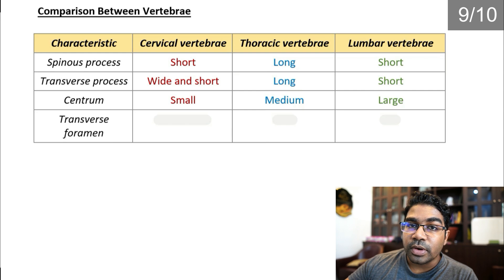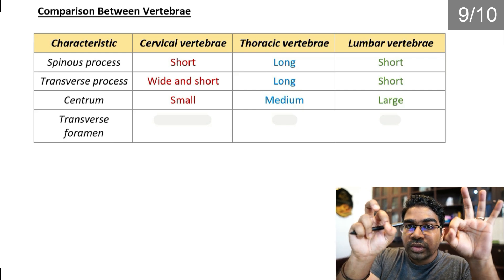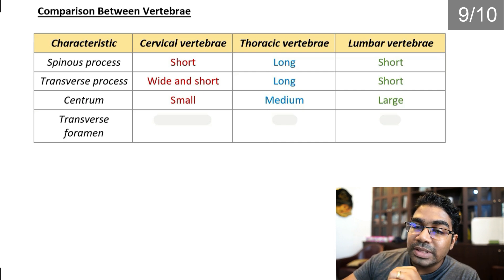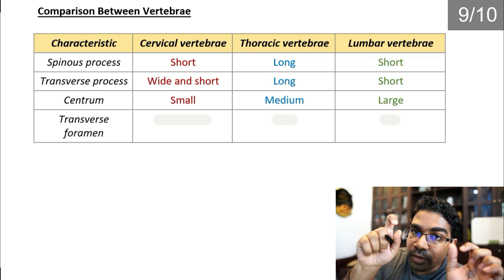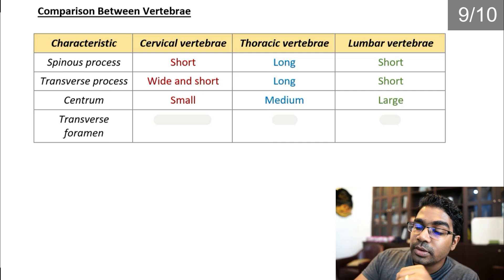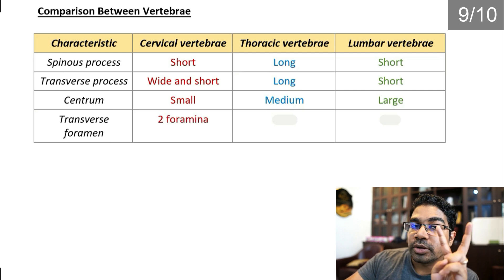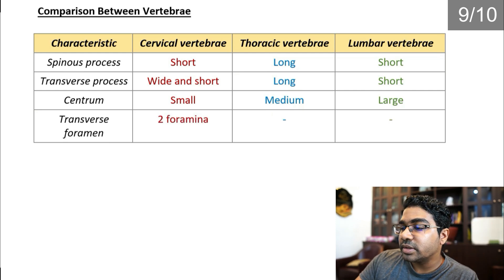The transverse foramen — the holes through which blood vessels and nerves pass — are only present in the cervical vertebrae, with two foramina. There are no transverse foramina in the thoracic or lumbar vertebrae.